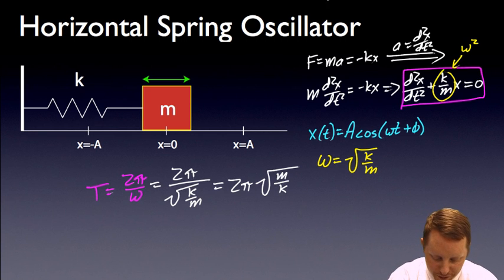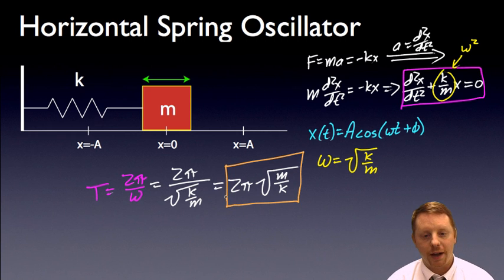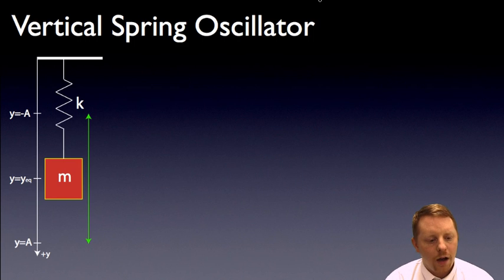And that formula may look familiar to you. That's the formula that they oftentimes have you memorize for the period of a mass spring oscillator. T equals 2 pi square root of m over k. That's how we derive it, that's where that function comes from.